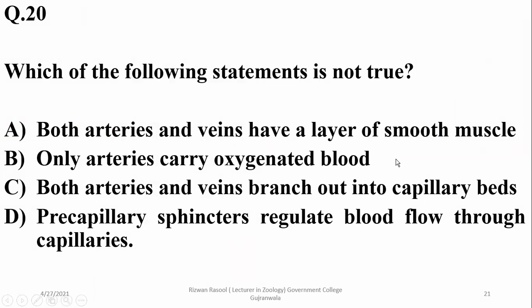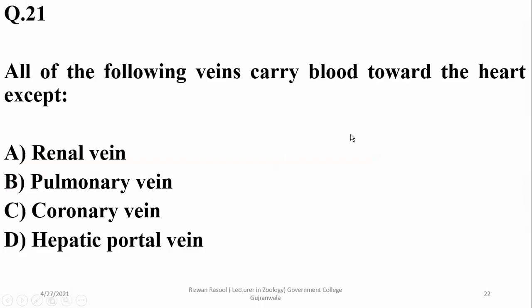Question number 20: which statement is not true? Both arteries and veins have a layer of smooth muscle — true. Only arteries carry oxygenated blood is a wrong statement, because veins such as the pulmonary vein and umbilical vein may also carry oxygenated blood. Both arteries and veins branch into capillary beds, and pre-capillary sphincters regulate blood flow through capillaries — both true. So the right option is that only arteries carry oxygenated blood.